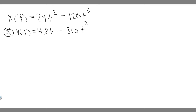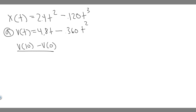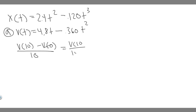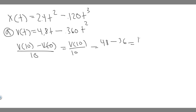Now for part a, we're trying to calculate the average velocity of the car from t equals 0 to t equals 10 seconds. We do that by taking v of 10 minus v of 0, divided by the total time of 10 seconds. Since plugging in 0 gives us 0, it's just v of 10 divided by 10. Plugging in 10: 4.8 times 10 is 48, minus 10 squared times 0.36 equals 36, giving us 12. Divided by 10, the average velocity is 1.2 meters per second.